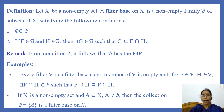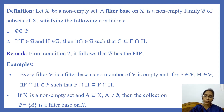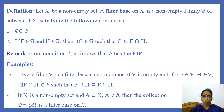The first example is: every filter F is a filter base. Because no member of a filter is empty, so the empty set doesn't belong to F. And for F in F and H in F, we know that the intersection of any two members of a filter is also in that filter, so there exists F intersection H in F such that F intersection H is contained in F intersection H. So the second condition for a filter base is also satisfied, and we can say that F is a filter base.